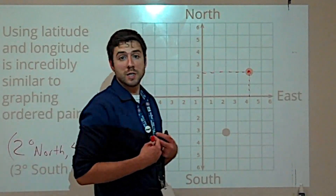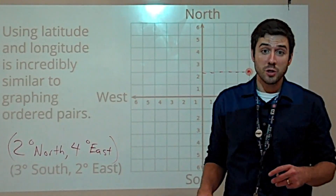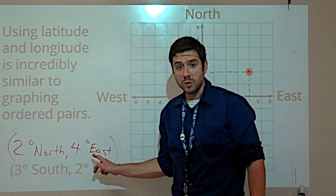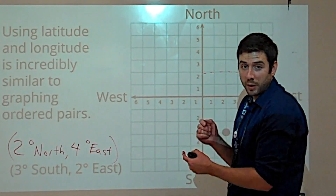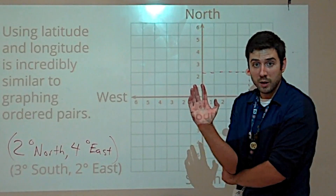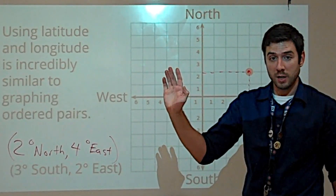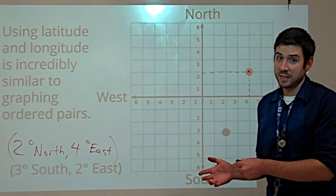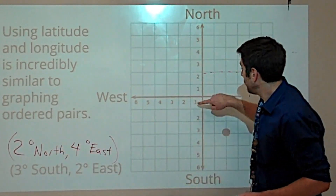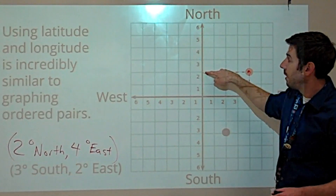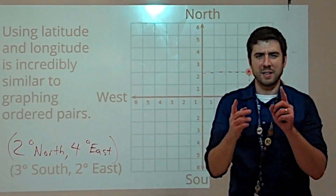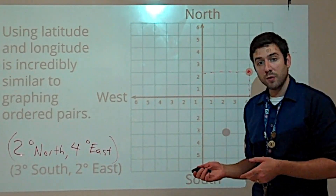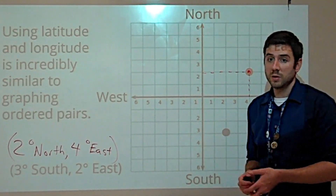Now, there is a difference between graphing ordered pairs and graphing latitude and longitude, and here's kind of where it is. The latitude is listed before the longitude, so it kind of reverses what you would typically see in an ordered pair. You'd see the x-coordinate first, then the y. Here you're seeing sort of the y and then the x — it's reversing the order. 2 degrees north is 2 degrees up on the y-axis. So that's kind of where people get confused: it's a switch of the order, but latitude is listed first in a coordinate, and longitude is listed second.